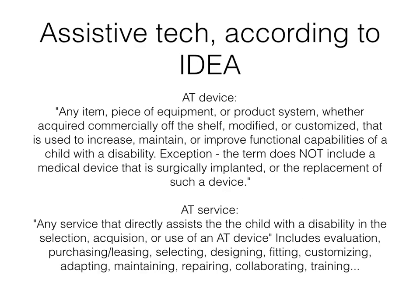When we talk about assistive technology for this lecture and this course, we're going to use the definition put forward by IDEA, the Individuals with Disabilities Education Act. Under IDEA, children with disabilities are entitled to assistive technology devices and services. An assistive technology device is defined as any item, piece of equipment, or product system — whether acquired commercially off the shelf, modified, or customized — that is used to increase, maintain, or improve functional capabilities of a child with a disability. This term does not include a medical device that is surgically implanted.